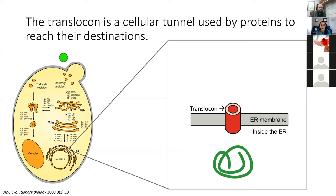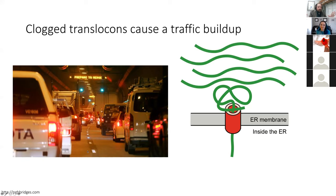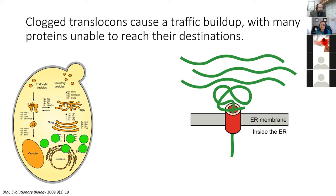Just like cars moving through a tunnel will occasionally break down and cause a traffic jam, proteins can also break down as they move through translocons. In the case pictured here, the protein began to fold prematurely such that a portion on the outside of the ER assumed a structure that was too big to pass through the tunnel. When I lived in Pittsburgh, I was very familiar with the consequences of clogged tunnels — cars would back up on the highway and everyone was late to work. Clogged translocons similarly cause a traffic buildup, causing accumulation of proteins in the cytoplasm unable to reach their final destinations. Clogged translocons are associated with a number of different human diseases, including type 2 diabetes, elevated cholesterol, and neurodegeneration.